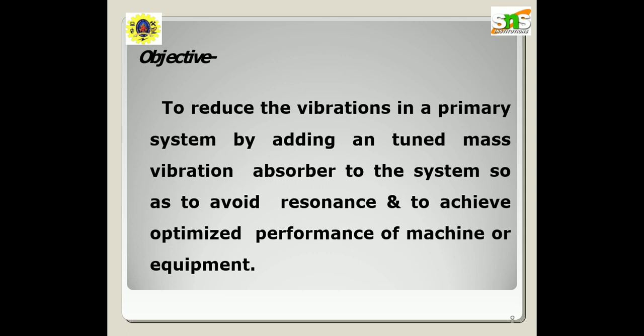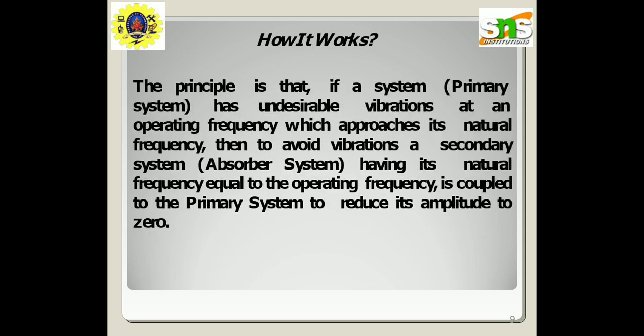The objective of this case study is to reduce the vibration in a primary system by adding a tuned mass vibration absorber, so as to avoid resonance and to achieve optimized performance of the machine or equipment. The principle is that if a system has undesirable vibration at an operating frequency which approaches its natural frequency, a secondary system having its natural frequency equal to the operating frequency is coupled to the primary system to reduce its amplitude to zero.